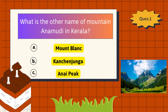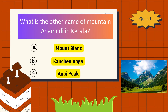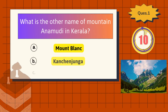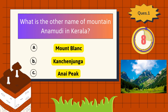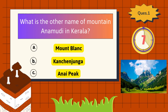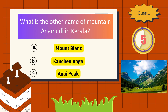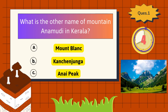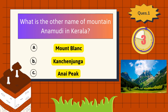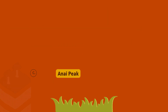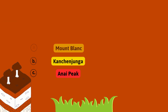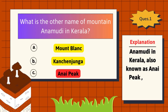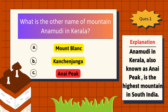What is the other name of Mountain Annamoody in Kerala? The correct answer is Ani Peak. Annamoody in Kerala, also known as Ani Peak, is the highest mountain in South India.